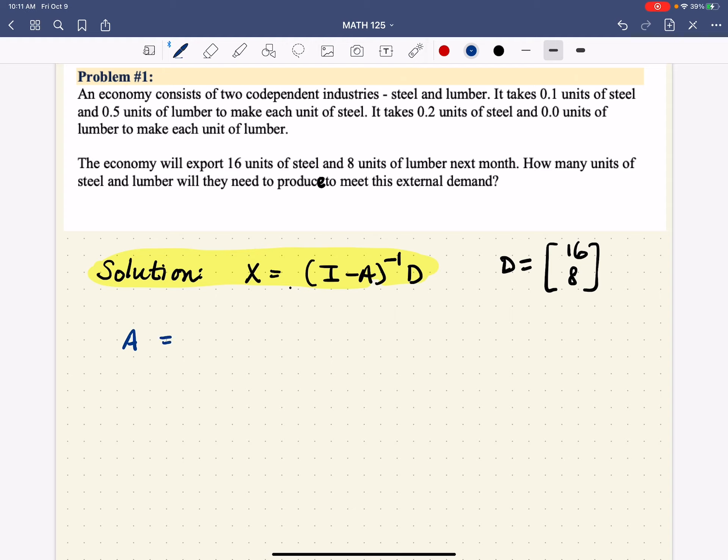Since we have steel and lumber, I'm going to put S and L here, and S and L here, and from the left we go from, and to the right we go to. It takes 0.1 units of steel and 0.5 units of lumber to make a unit of steel, which means 0.1 units of steel go to steel, and 0.5 units of lumber go to steel. Same thing on the other side. It takes 0.2 units of steel and no units of lumber to make lumber. So that means this is 0.2 and 0.